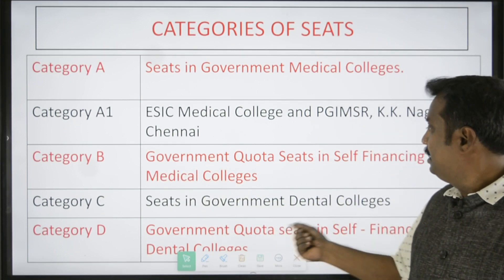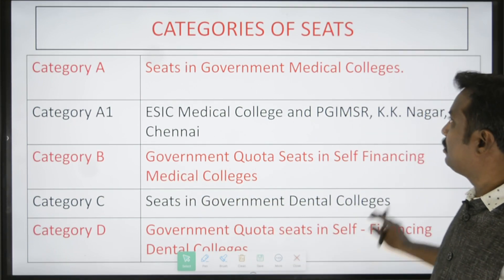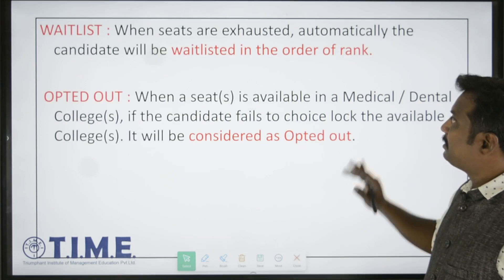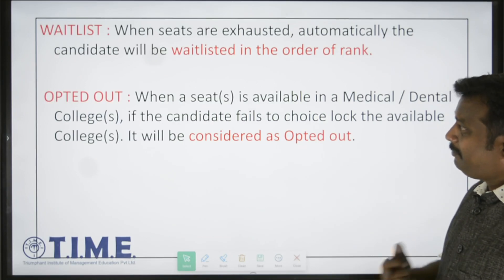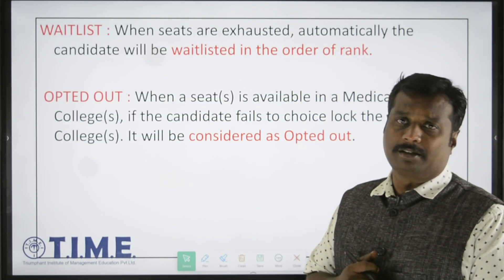This is the total category of seats. Next, waitlist and opted out — waitlist refers to the top mark number.